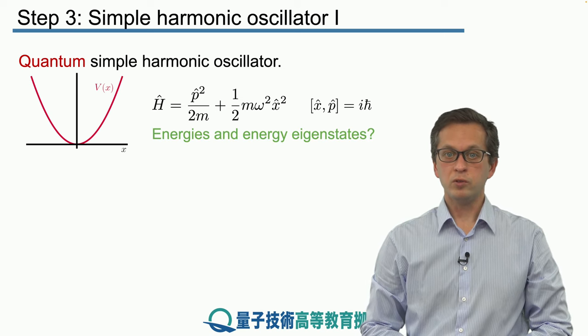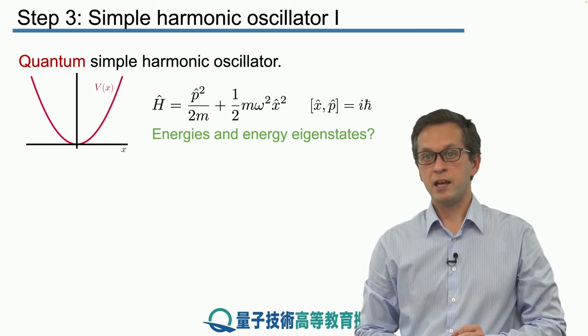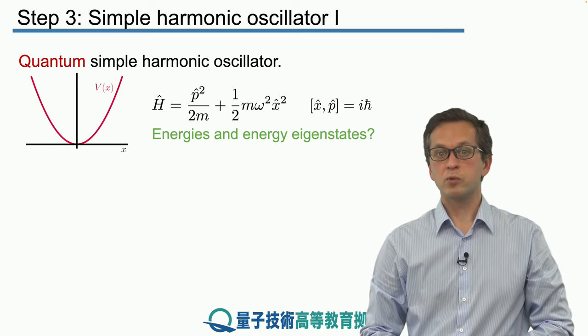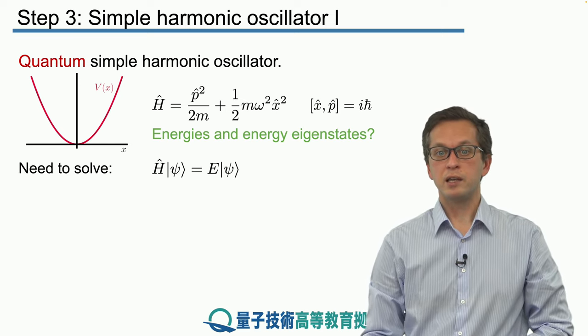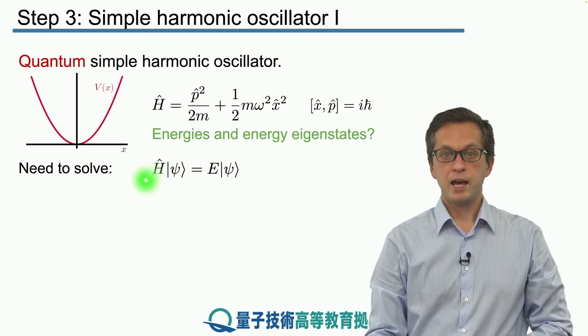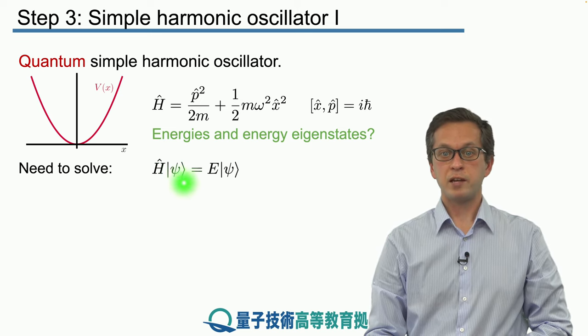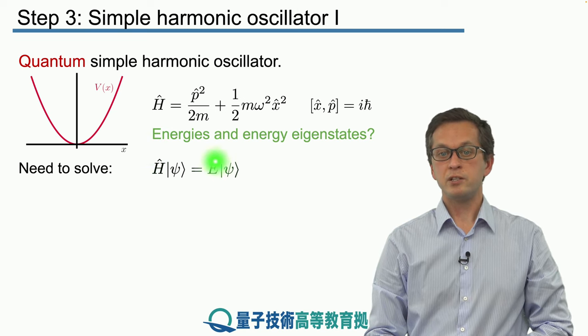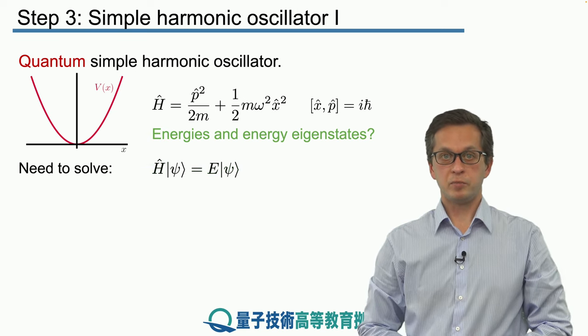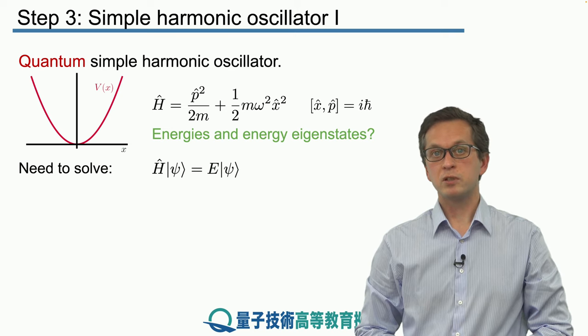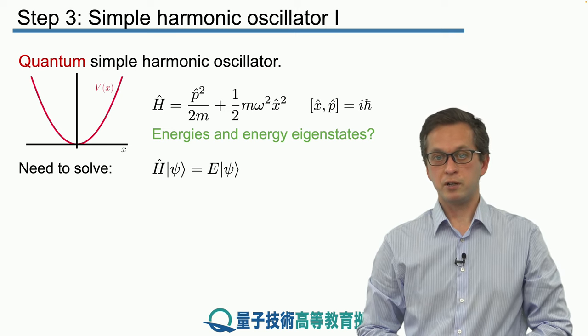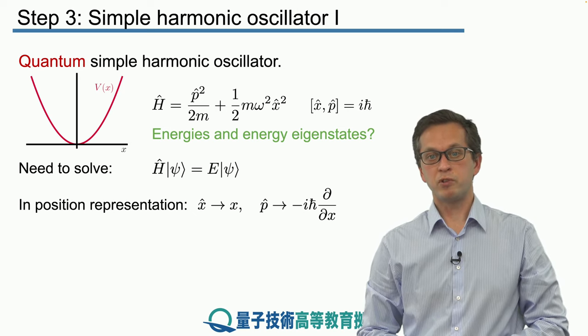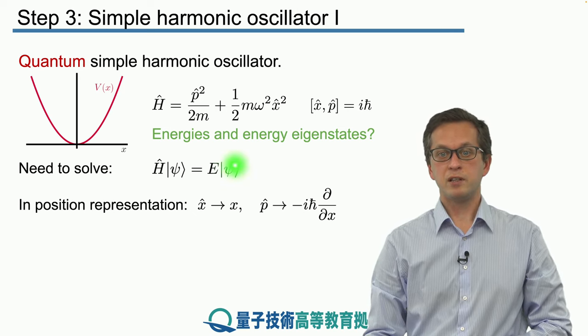Now we are interested in the energies and the energy eigenstates of this Hamiltonian. In other words, we want to solve the eigenvalue problem: h hat applied to our vector psi gives us energy E times the vector psi. This is also known as the time independent Schrodinger equation. Normally, how it's done in textbooks is you go into position representation.